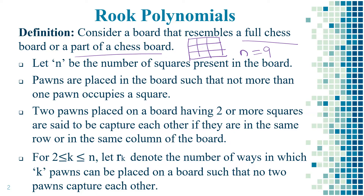Two pawns placed on a board having two or more squares are said to capture each other if they are in the same row or in the same column of the board. For example, if I place the first pawn at a position, the second pawn can be placed in the same row or in the same column of that placement.